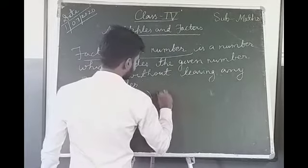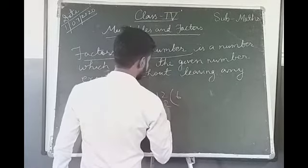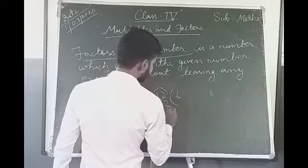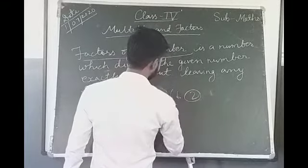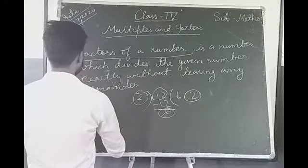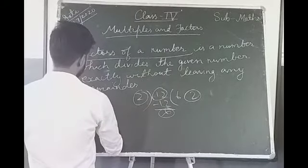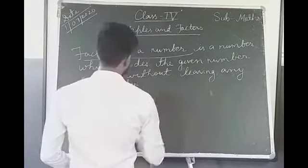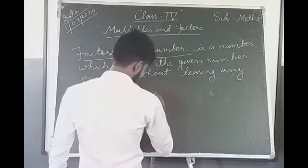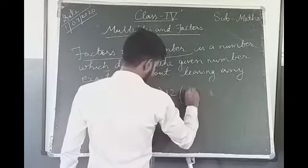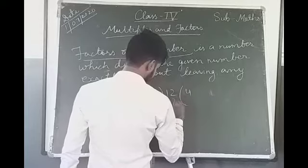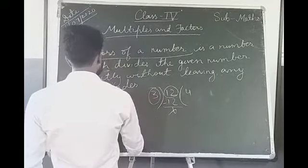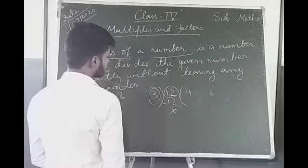12 divided by 2 gives remainder 0. So 2 is also a factor of 12. What we have seen so far: 1, 2. Now 3. 12 is also divisible by 3. So 4 is also the factor of 12.